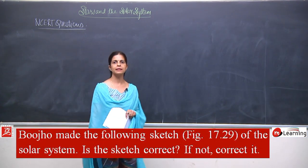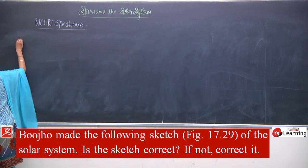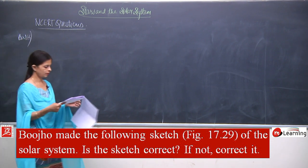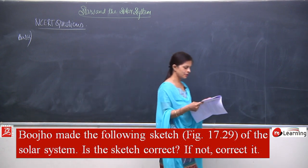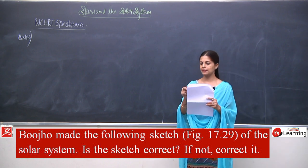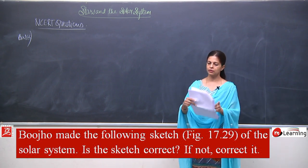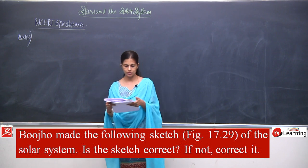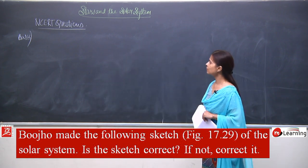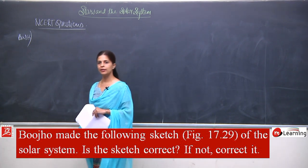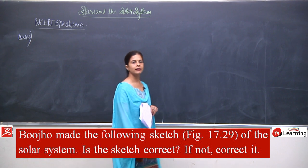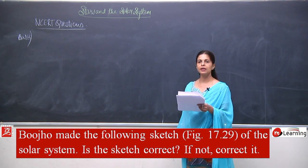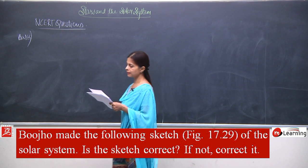Now we will talk about answer number 16. The question is: Buju made the following sketch of the solar system — is the sketch correct? Actually this is the last question, which means we were supposed to do question number 15 first, but now I have started answer number 16. Let it be — we will solve this first and then solve question 15. So question number 16: a sketch is given and we have to find out whether the sketch drawn is correct or not.